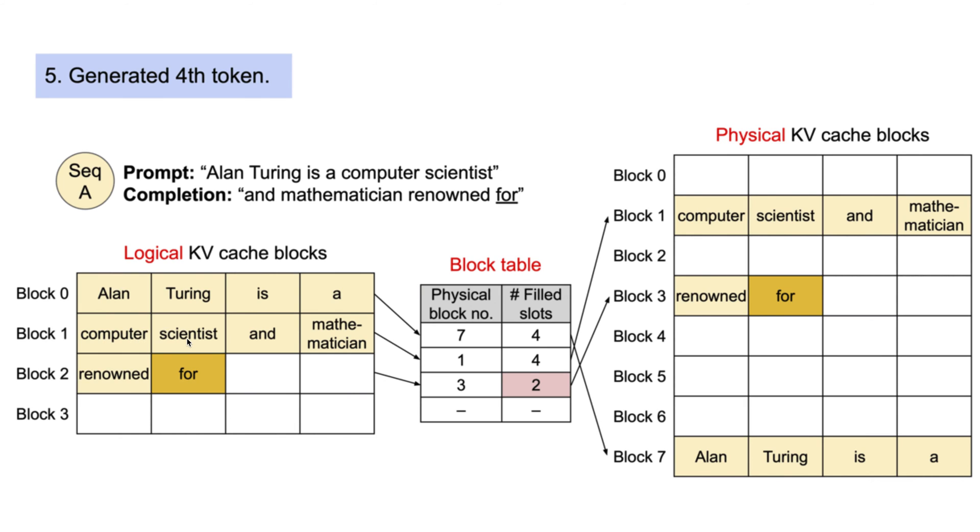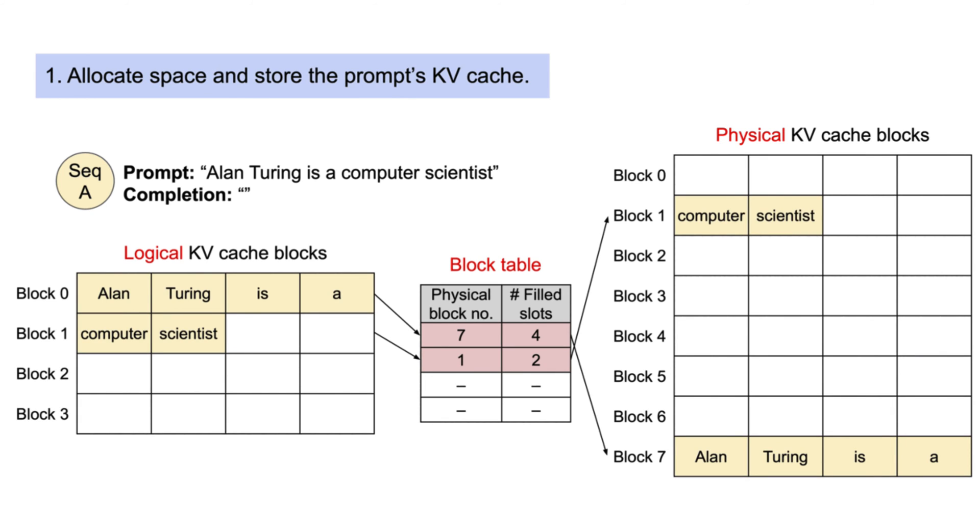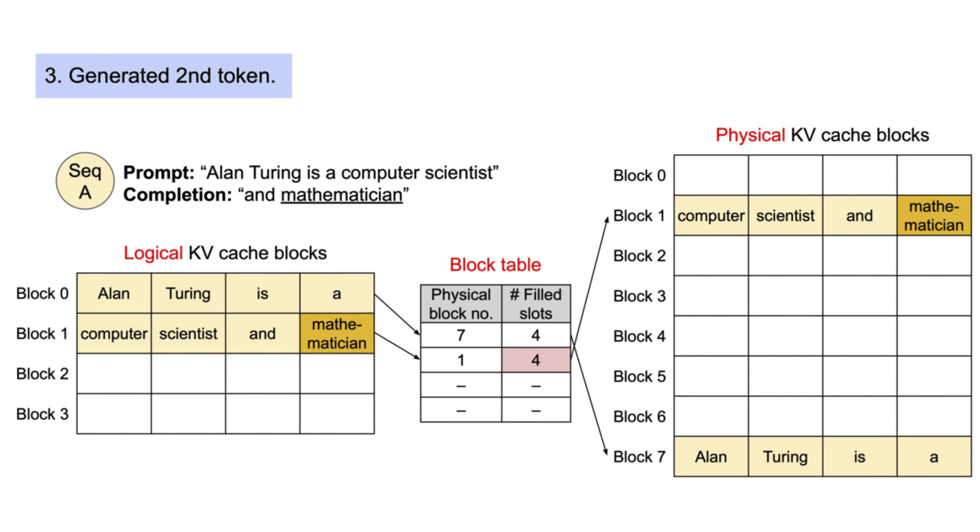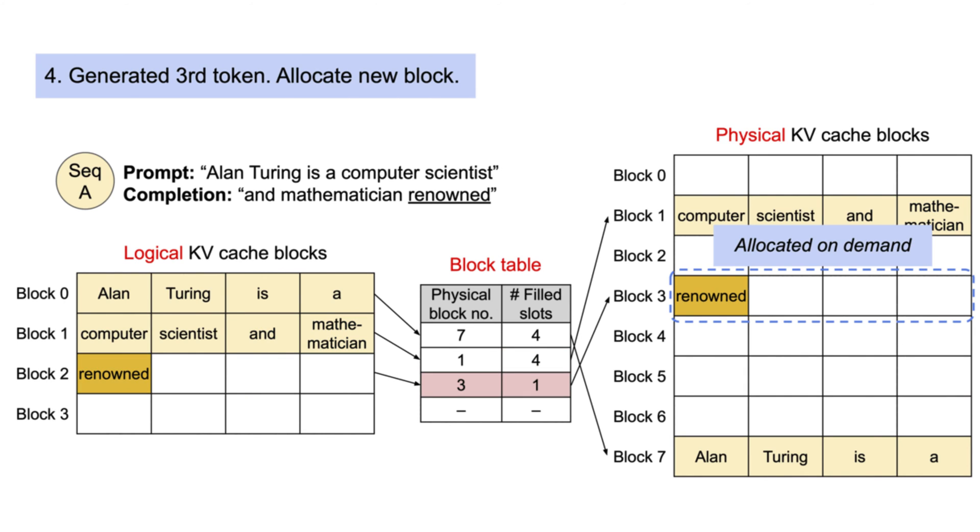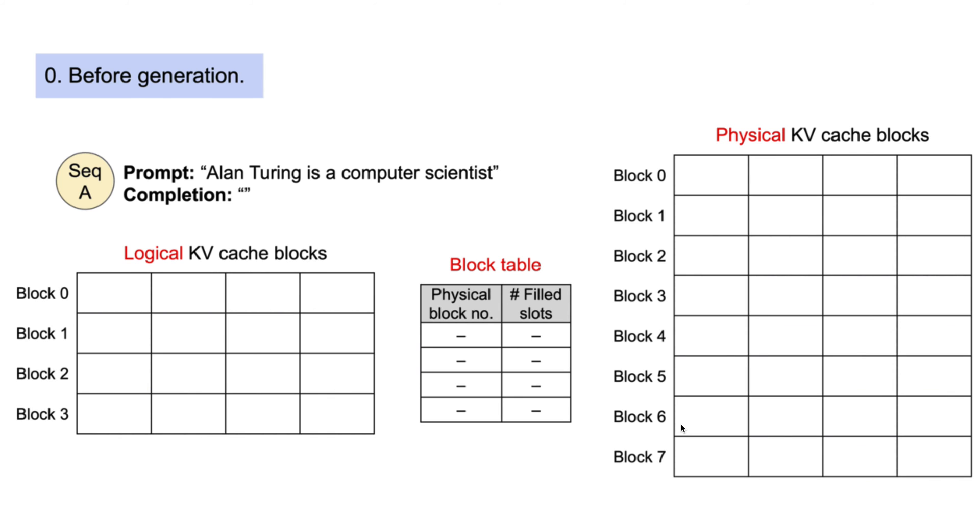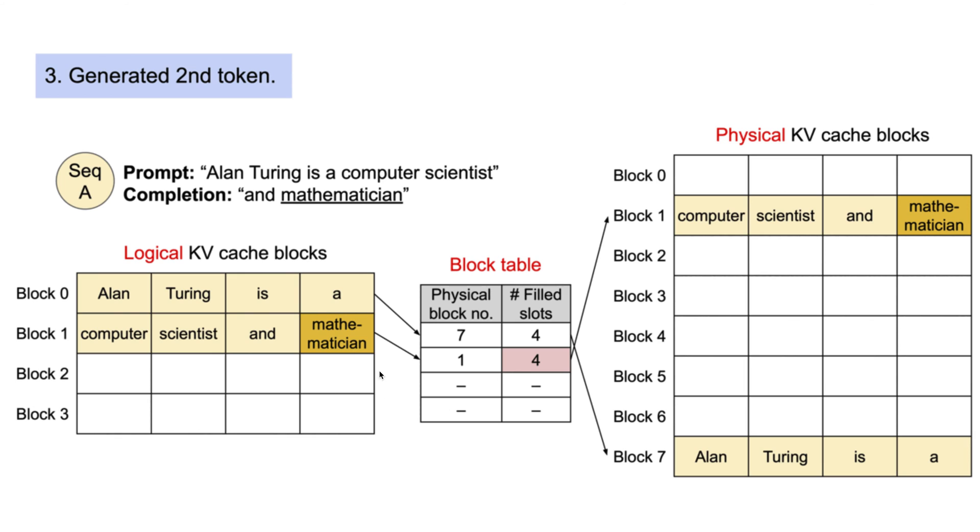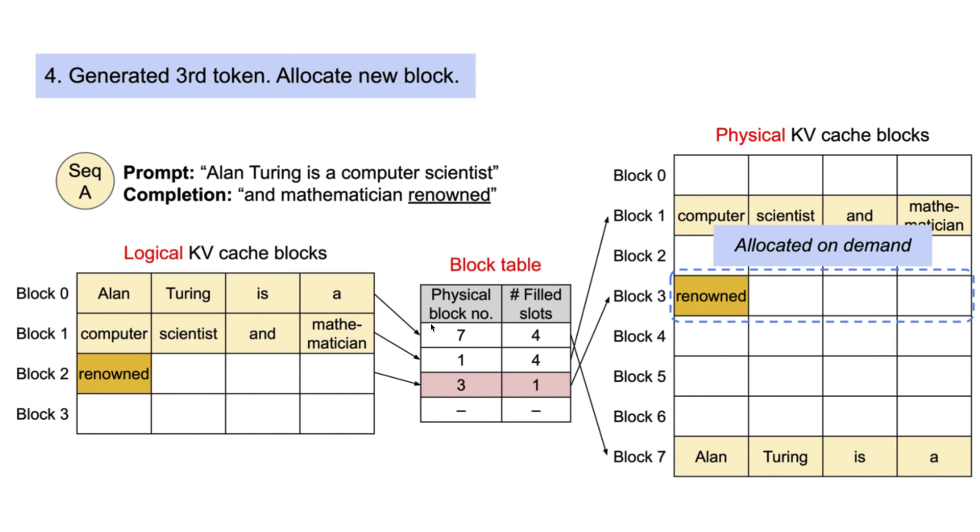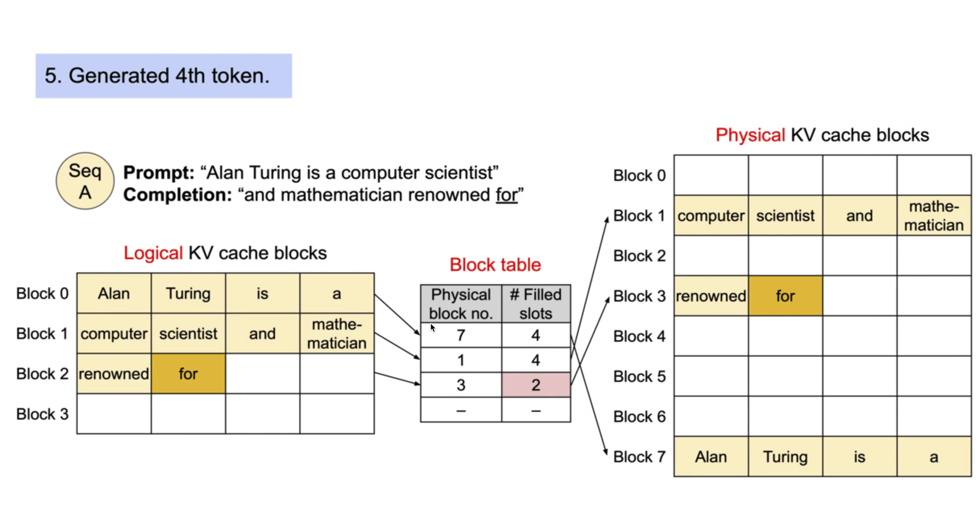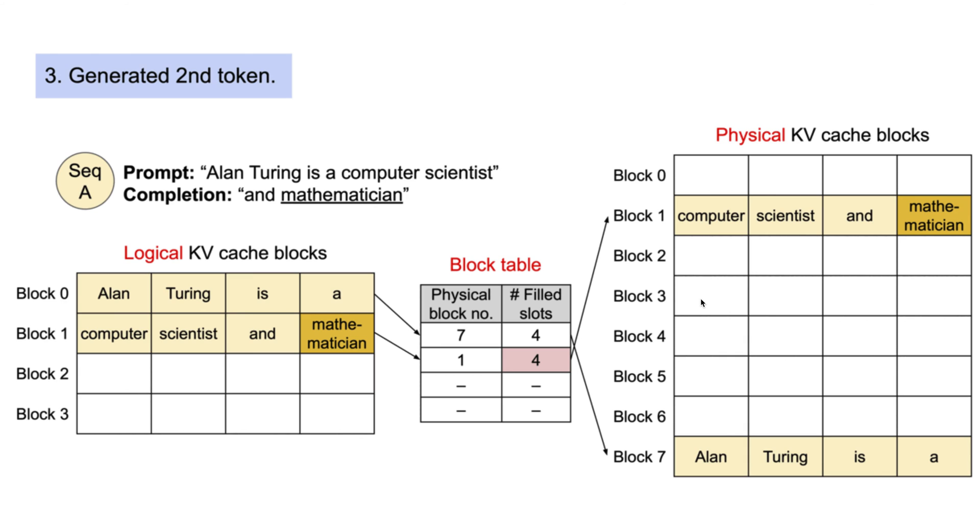vLLM stores the KV cache of the first four tokens in logical block zero, and the following three tokens in logical block one. After that, the remaining slot is reserved for subsequent generation. In the first autoregressive decoding step, vLLM generates the new token with the page attention algorithm on physical blocks seven and one. Since one slot is remaining on the last logical block, the newly generated KV cache is stored there and the block table field record is updated.